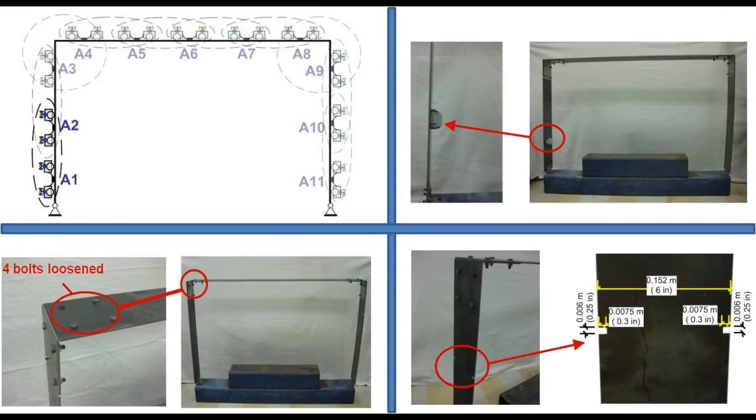The mobile sensor performance is first validated by laboratory damage detection experiments. The upper left figure shows an experimental setup. Two mobile sensors navigate on a steel portal frame and take measurements at each location pair. A hammer excitation is applied between every pair of locations. Three damage scenarios are studied.